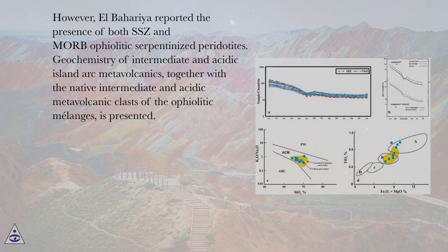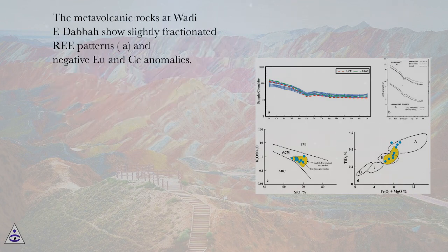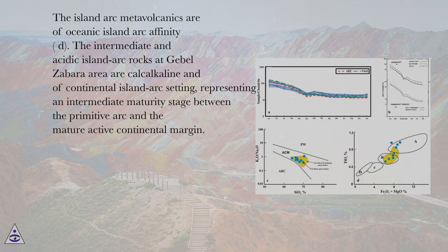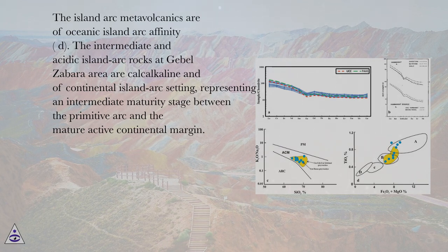Geochemistry of intermediate and acidic island arc metavolcanics, together with the native intermediate and acidic metavolcanic class of the ophiolitic mélanges, is presented. The metavolcanic rocks at Wadi el-Daba show slightly fractionated REE patterns (A) and negative Eu and Ce anomalies. The island arc metavolcanics are of oceanic island arc affinity (D); the intermediate and acidic island arc rocks at Gabal Zabara area are calc-alkaline and of continental island arc setting, representing an intermediate maturity stage between the primitive arc and the mature active continental margin.